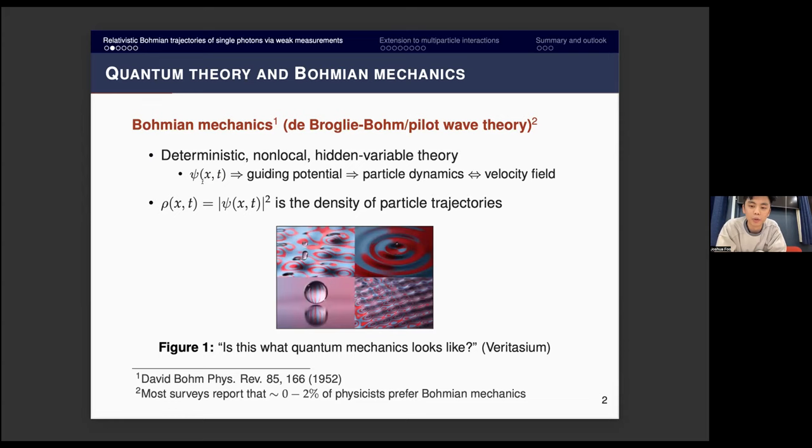As with any good interpretation of quantum theory, it agrees with a lot of the standard predictions of quantum mechanics. For example, the probability density is now interpreted as a density of particle trajectories, given some initial conditions.